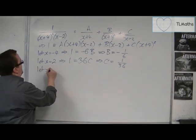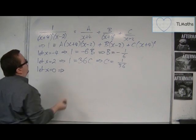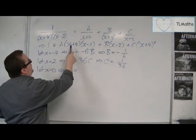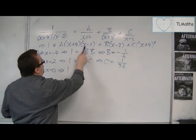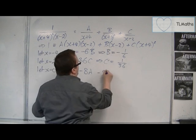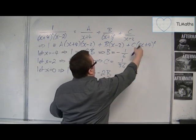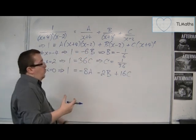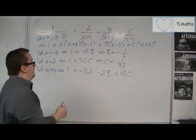So if I sub in x is 0, because it's easy to work with, I'm going to get 1. I'm going to get 0 plus 4 times 0 minus 2, so minus 8a. So I've got a, I've got minus 2b, and I've got 16c. Now I know what c is, and I know what b is.